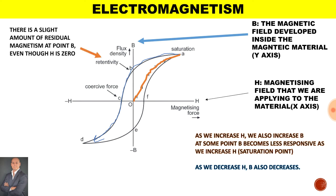Now what we find is that there is a slight amount of residual magnetism at point B, even though H is 0. So what this means is that even when there is no current passing through the material, there is still some magnetism that is left behind. And that is known as residual magnetism.